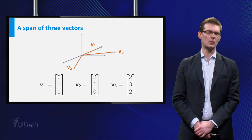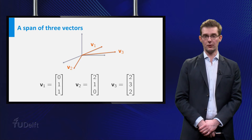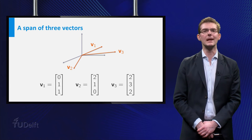So what is the difference between these examples? Why is the span the entire space R3 in the first example, and do we only get a plane in the second one?